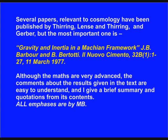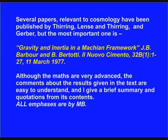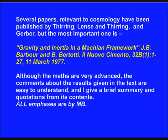Several papers relevant to cosmology have been published by Thiring, Lenz and Thiring, and Gerber. But the most important one is 'Gravity and Inertia in a Machian Framework' by J.B. Barber and B. Bertotti, published in Il Nuovo Cimento, 32B(1), pages 1 to 27, on the 11th of March, 1977. Although the maths are very advanced, the comments about the results given in the text are easy to understand, and I give a brief summary and quotations from its contents. All emphases are by MB.